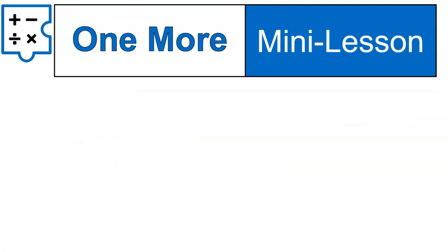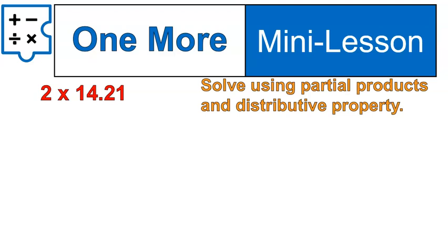For our last question, we are going to look at 2 × 14.21. I want you to try this one out on your own. Try using those partial products and distributive property. So expand out that second number and do the multiplication. Pause the video, come back, and show me what you did.